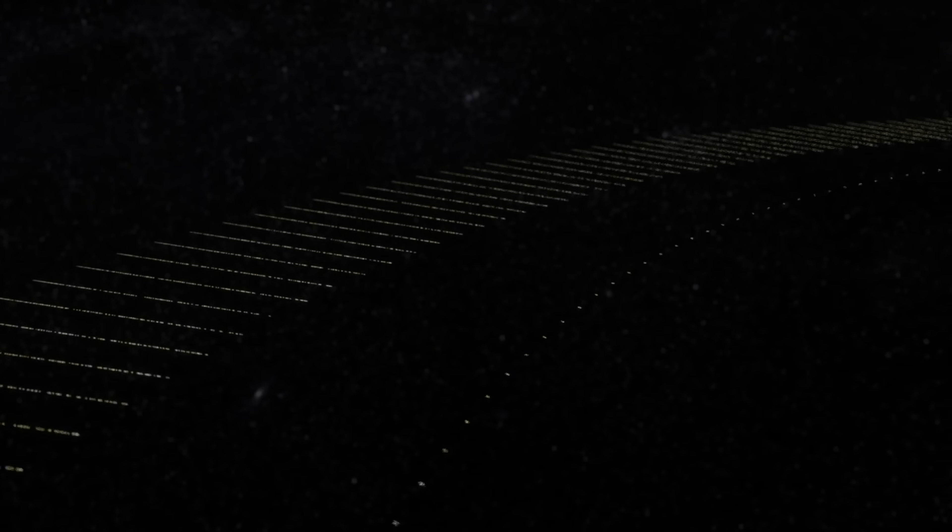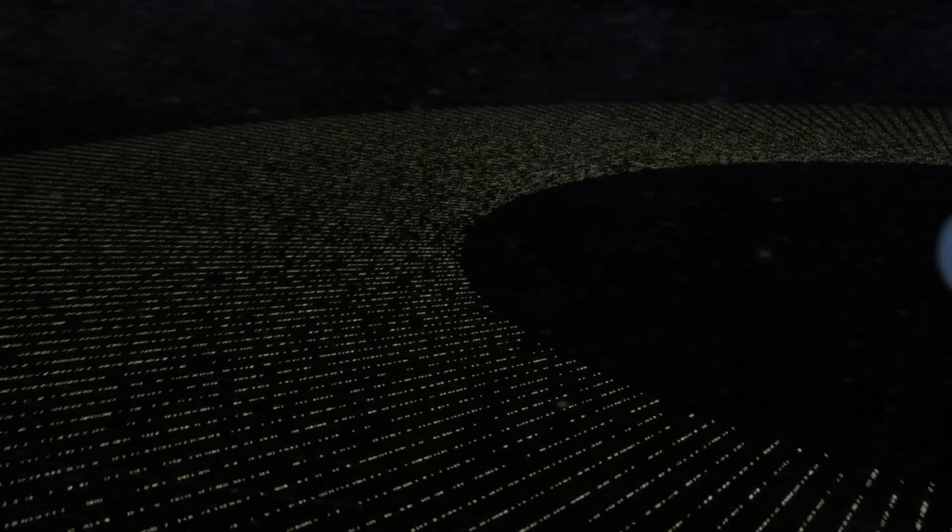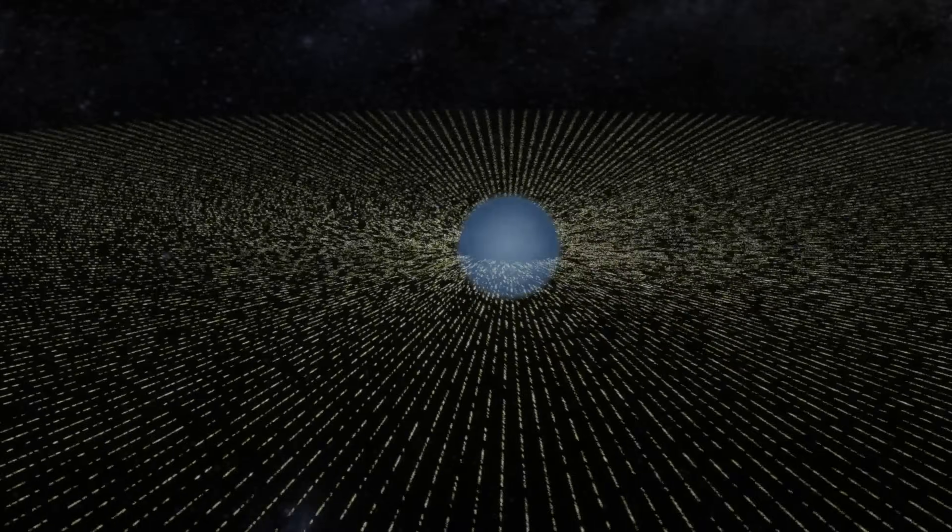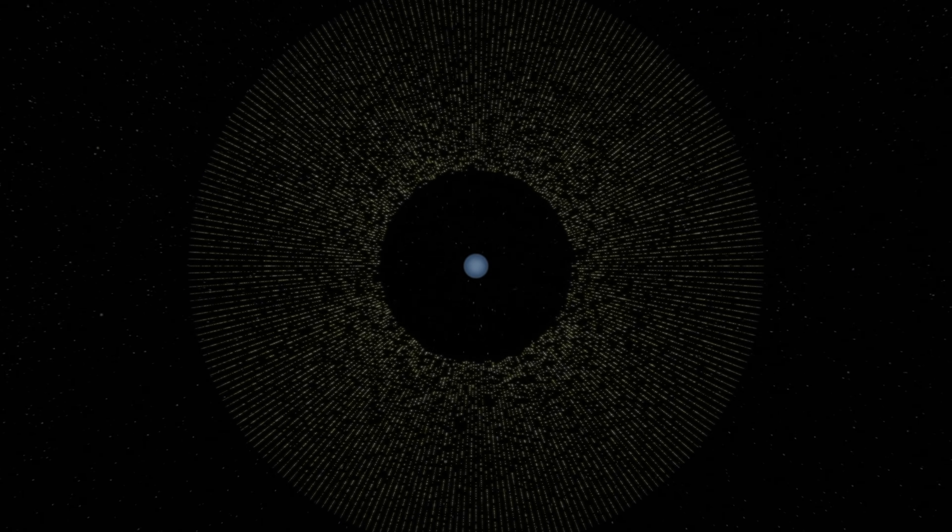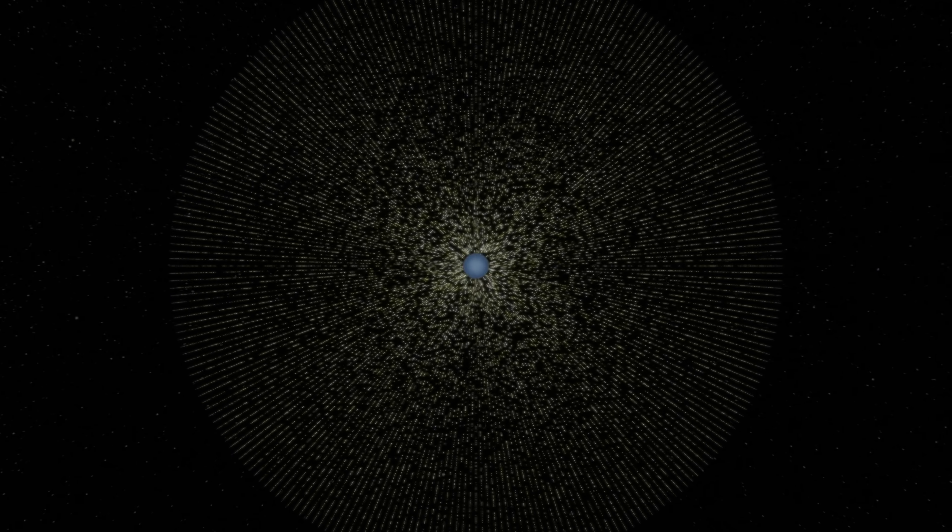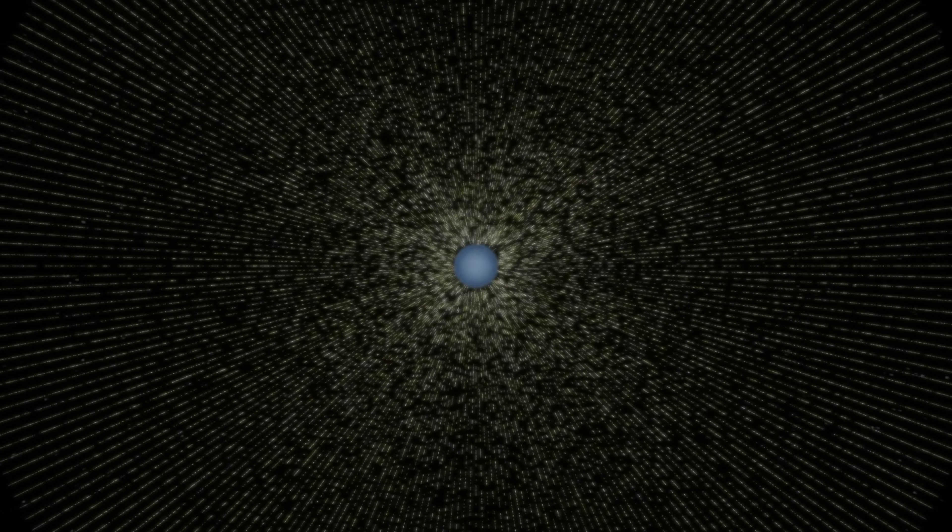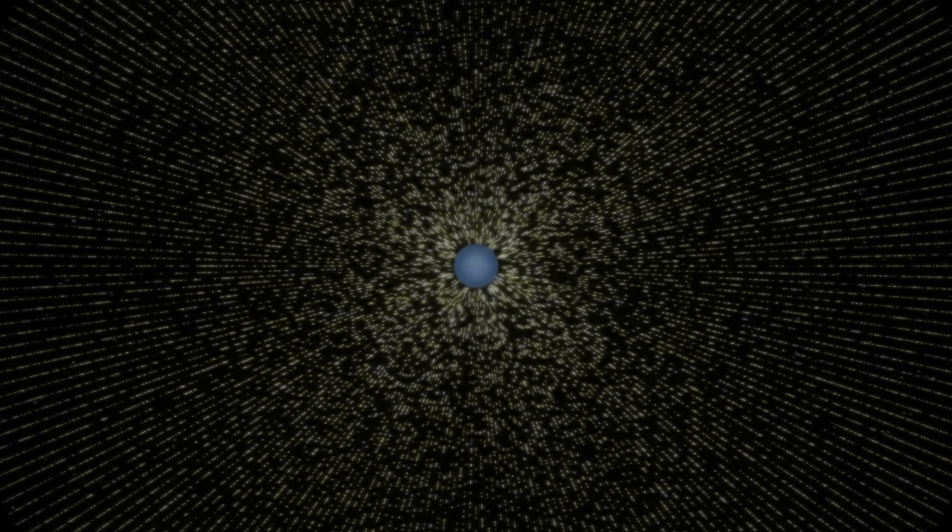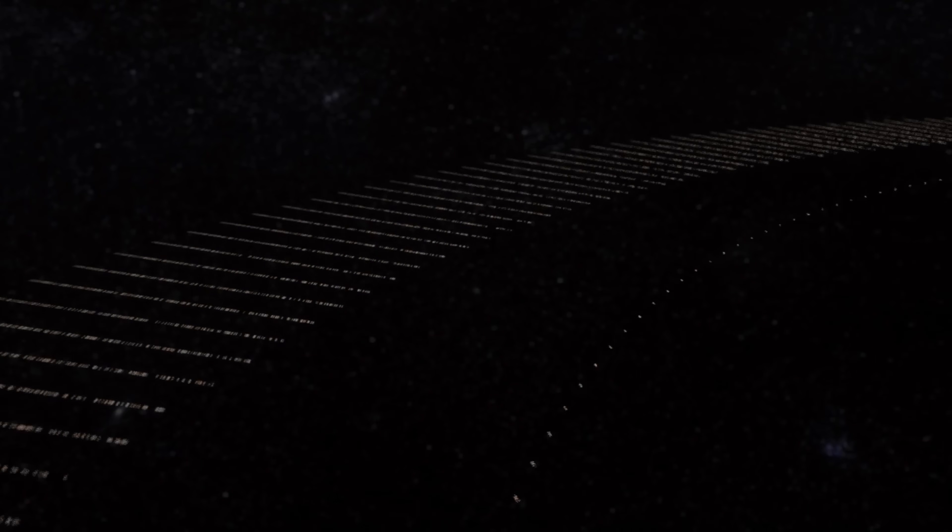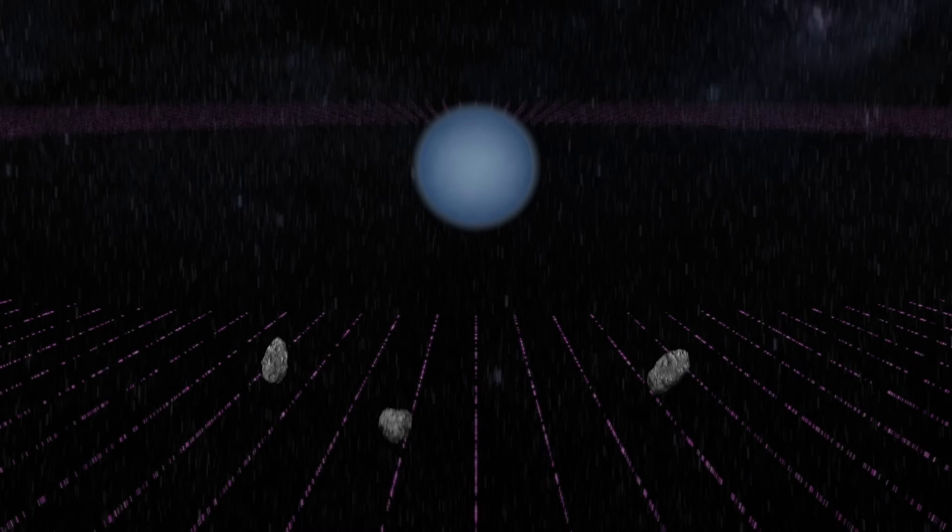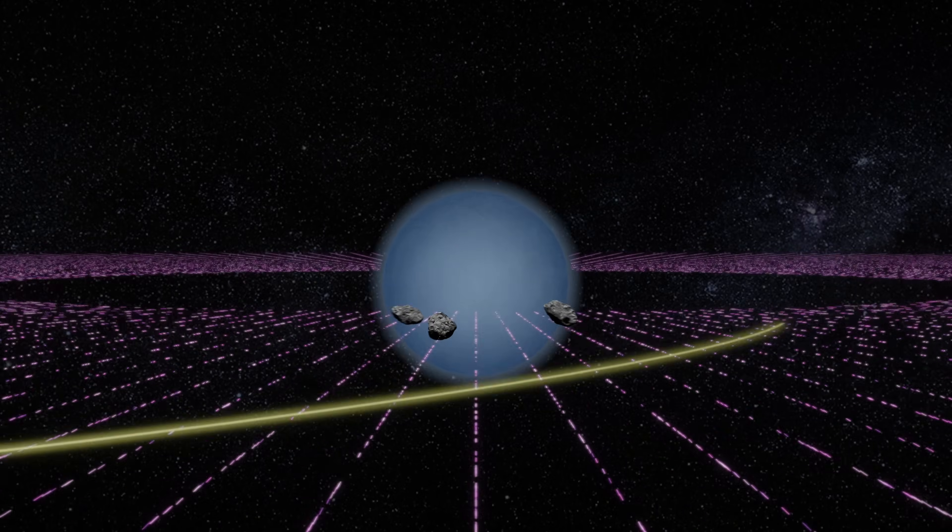...we will soon have a sea of particles flowing faster and faster inwards towards the mass. What would you say this is a picture of, exactly? A large number of particles all subject to an inwardly attractive force? Well, what if it weren't these particles which were moving at all, but rather space itself that was truly flowing, sweeping the particles, other masses, and even light along with it?